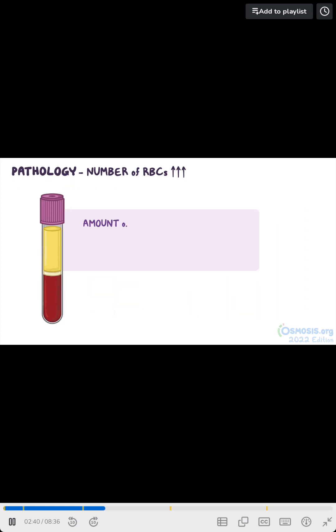Alternatively, if the amount of fluid in the blood decreases, like with dehydration, the concentration of RBCs increases and the hemoglobin and hematocrit will also increase.